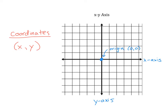For any values going to the right on the x-axis, these values are positive. For any values going to the left on the x-axis, these are negative — just like a number line. For the y-axis, going up is going to be positive and going down is going to be negative. So now we have a way to describe both positive and negative x and y values.